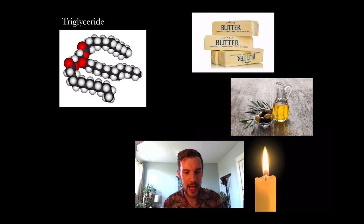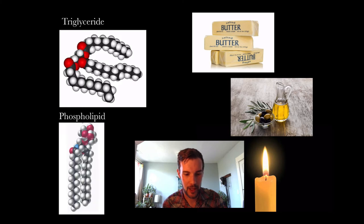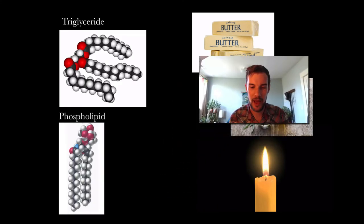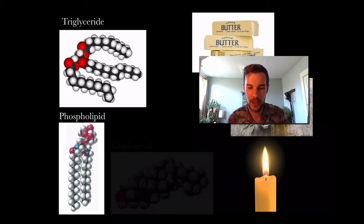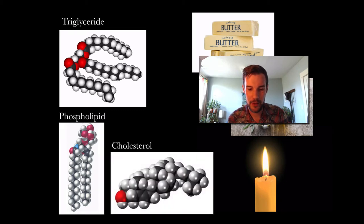The first one, triglyceride, is going to have three tails and this is what the 3D model looks like. The other one, phospholipid, is going to have two tails so it looks similar, they both have a unique head on them. And then cholesterol looks kind of like a blob.